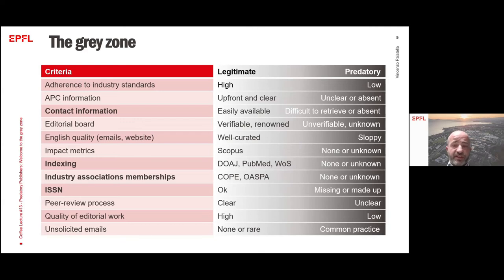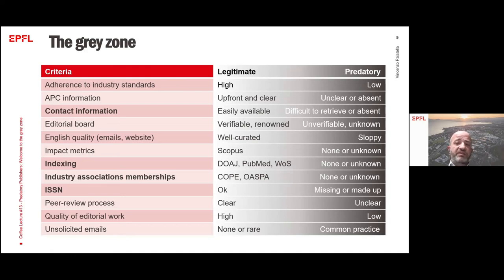The devil is usually in the details, but to spot a predatory publisher sometimes you should rather look at the big picture, taking into consideration as many criteria as you can. For example, I recently came across a website that contradicted most of the criteria listed here — the website layout was quite neat and cutting edge, there was a nice and detailed diagram of the editorial process, the article processing costs were stated quite clearly — but still, eventually, this was a predatory publisher.